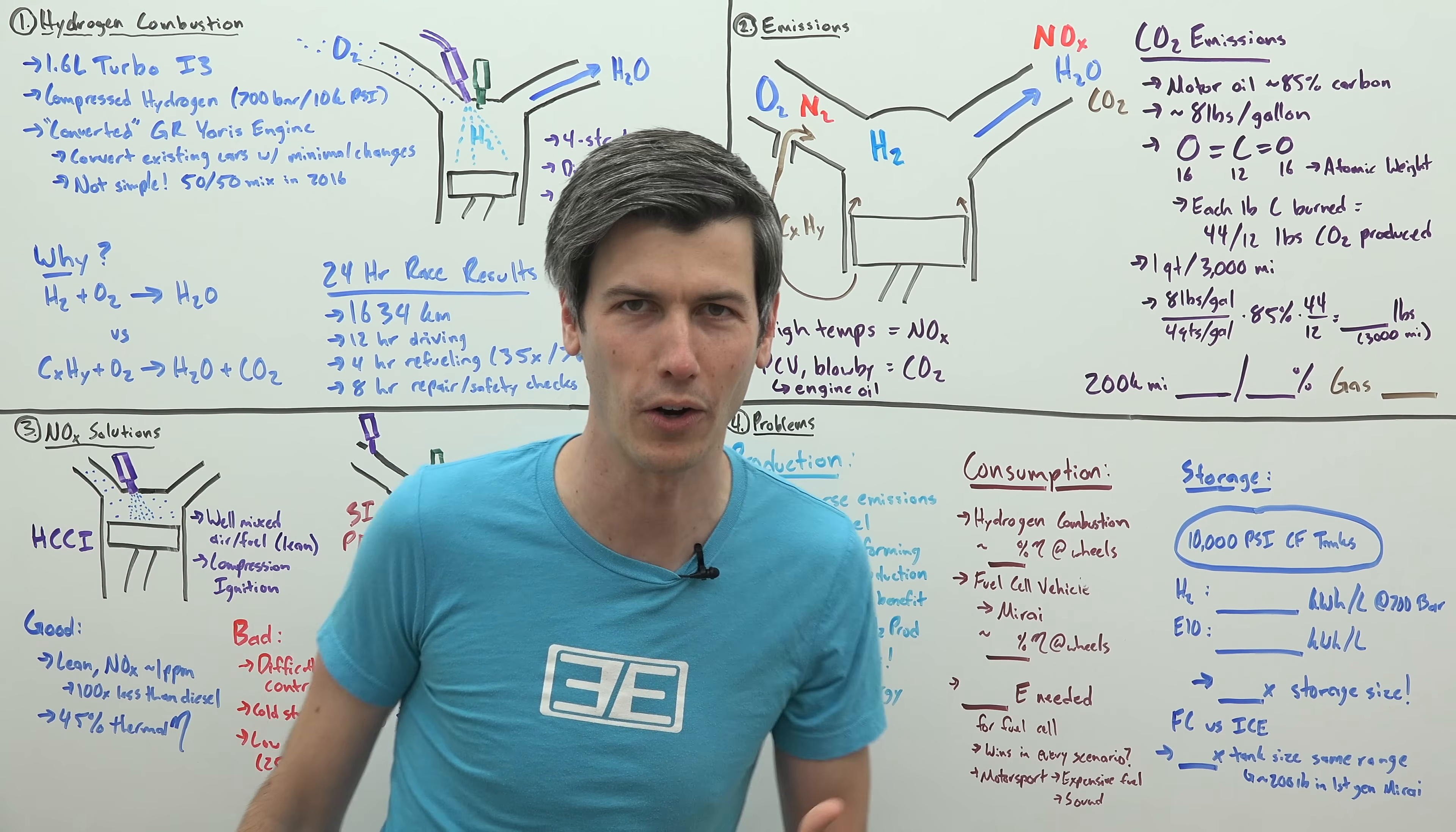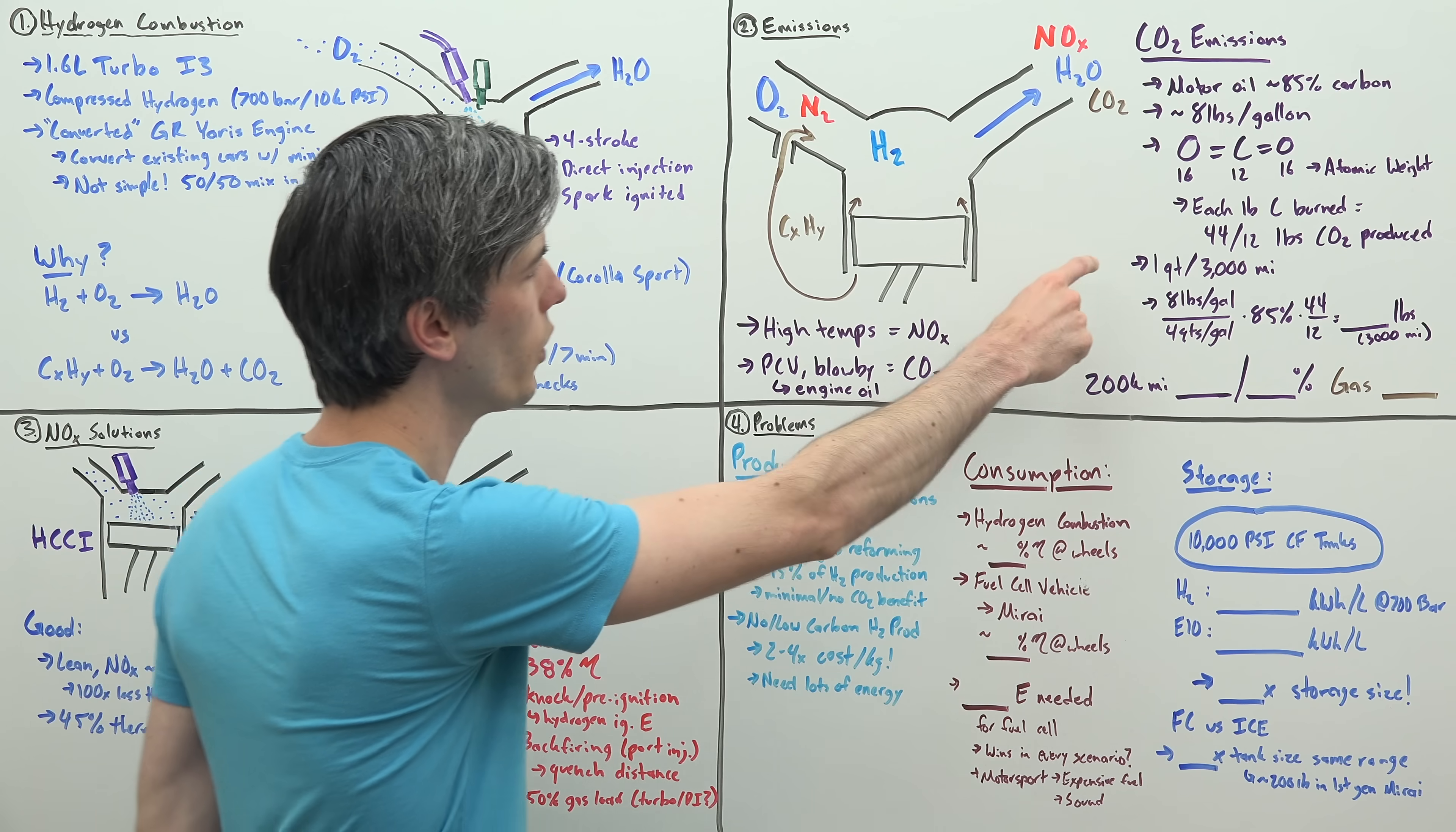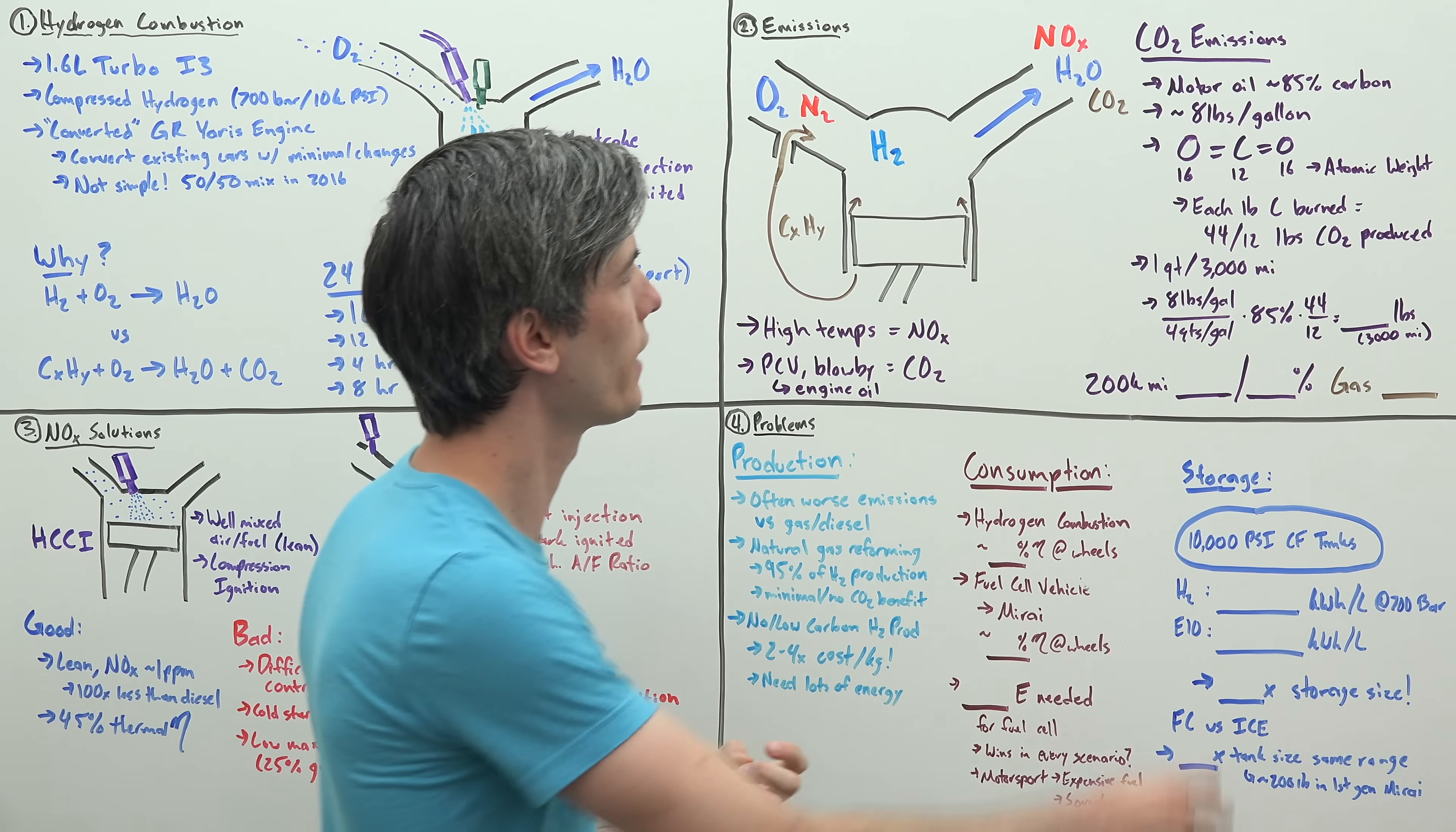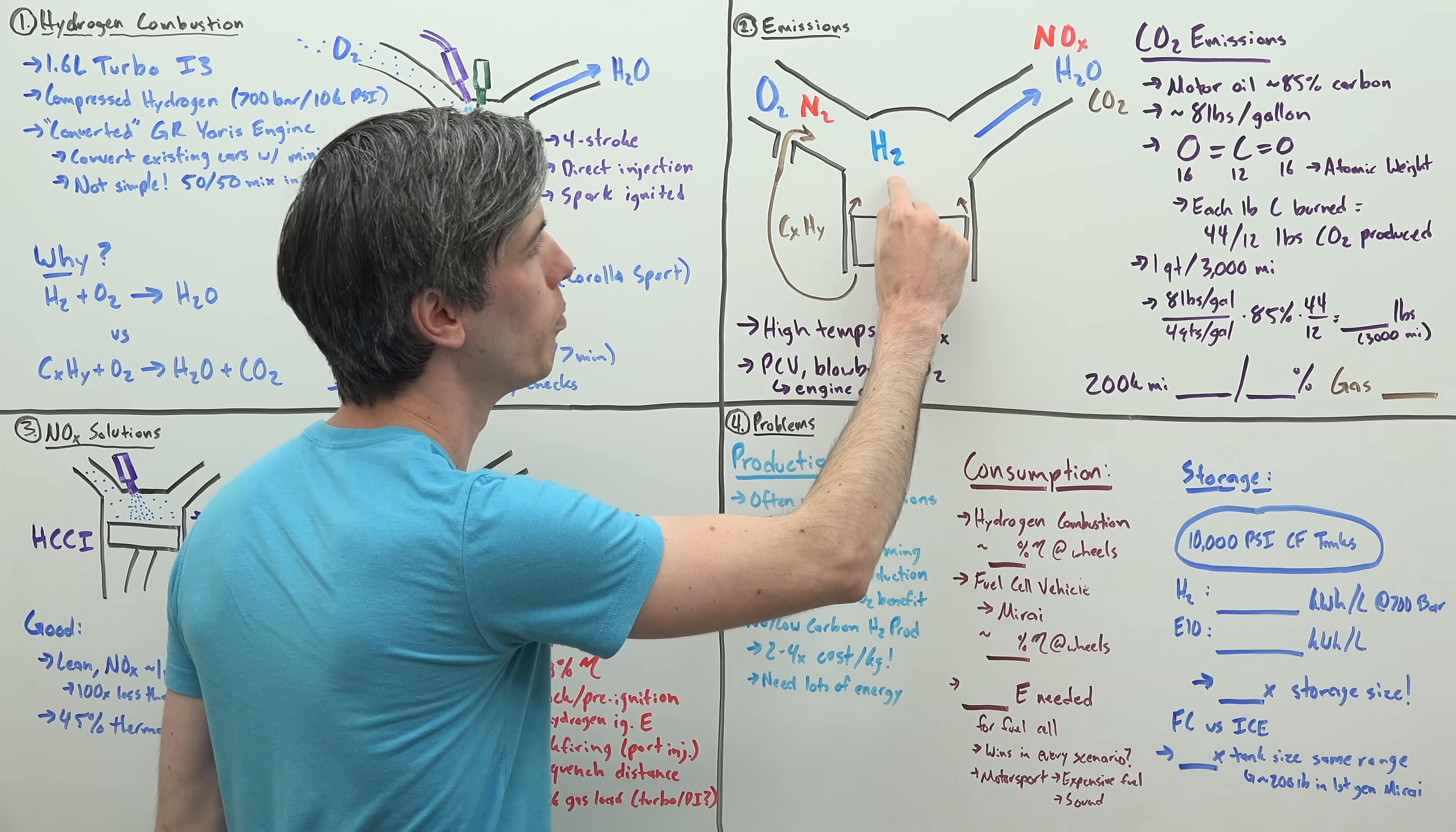Let's say you have a car that burns a quart of oil every 3,000 miles. Motor oil is about 85% carbon and weighs about 8 pounds for a gallon. A molecule of CO2 is a carbon with 2 oxygens. Looking at their atomic weights: 12 for carbon, 16 for oxygen. So for every pound of carbon that you burn, you have about 3.7 pounds of CO2 produced.